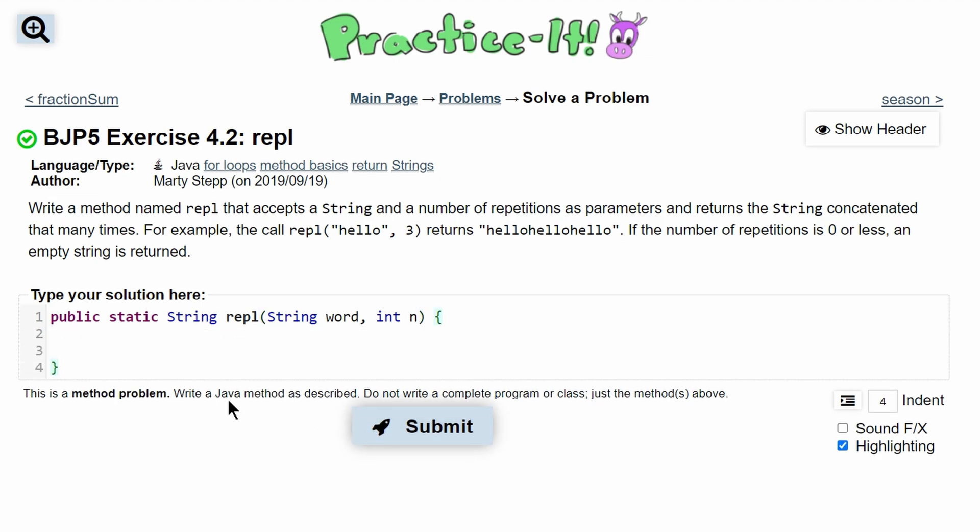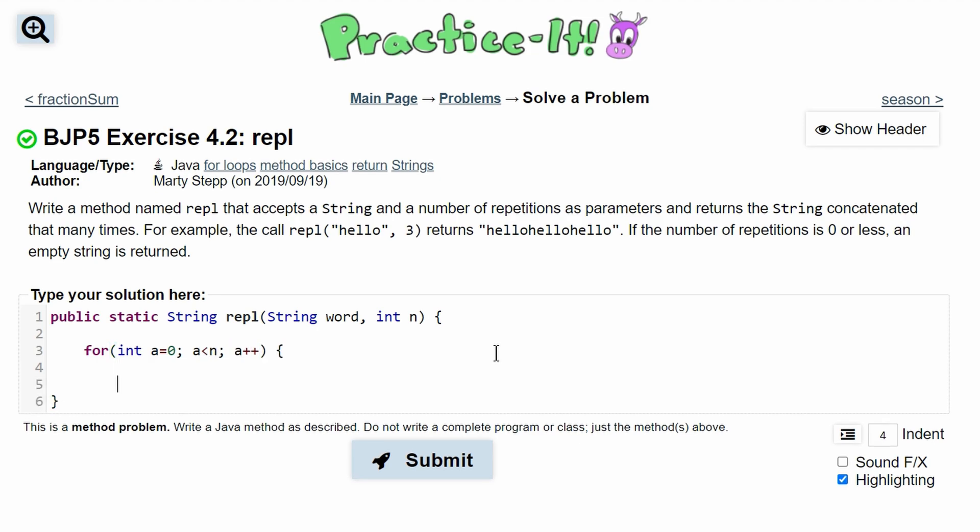Next, we're going to have our brackets to close our method, and now we can write inside of it. Since we have a number that we need to iterate to, we're going to use a for loop. We'll do for int a equals 0, a is less than n, and then a++. That way we can eventually break out of our for loop.